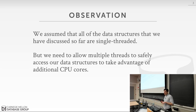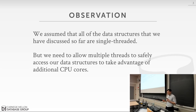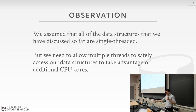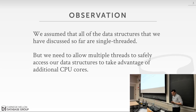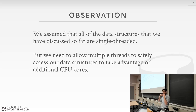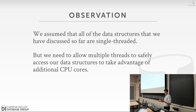Up until now, when we talked about data structures — B+ trees, hash tables, skip lists — we've been assuming we were building data structures that would operate in a single-threaded environment, meaning only one thread was going to be reading or writing to the data structure at a time. Now we want to talk about doing things correctly in a multi-threaded environment with multiple CPU cores.